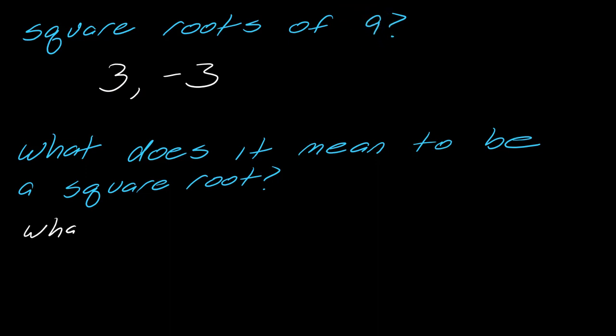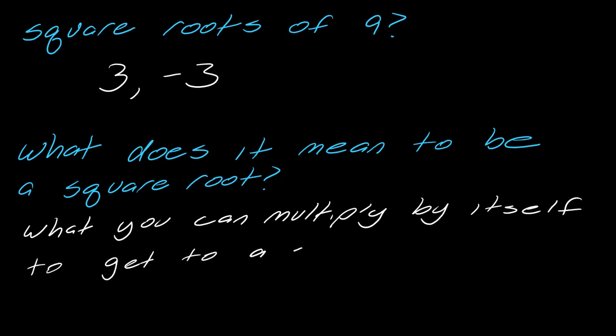So let me write that down. In the case of 3, we know that 3 times 3 equals 9, and then negative 3 times negative 3 will also equal 9 because the negative cancels out the negative. So that's what it means to be general square roots.